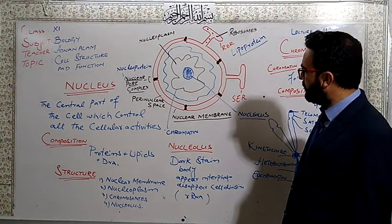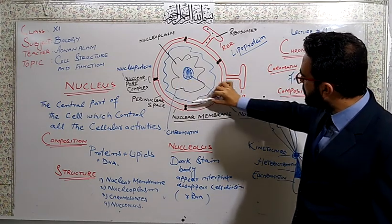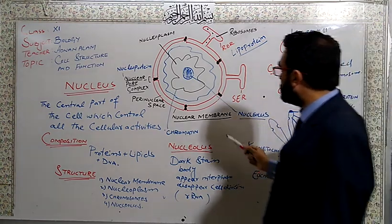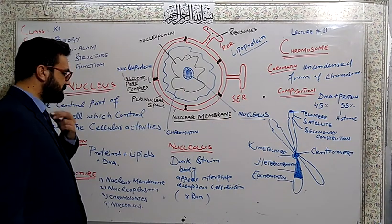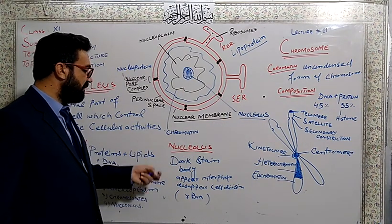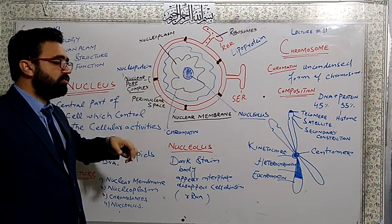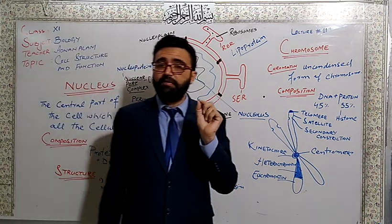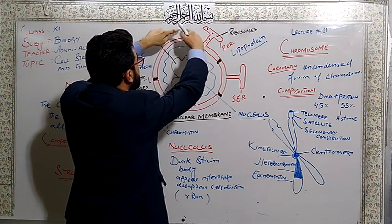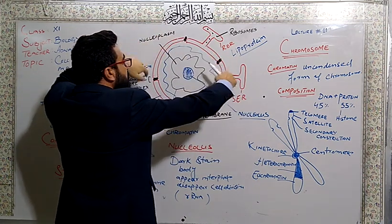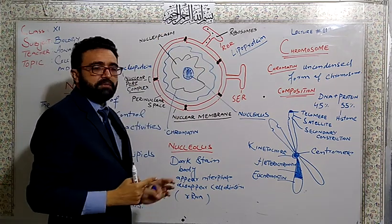The space between the two membranes is called perinuclear space. Inside the nucleus there is a dark stained body which is called nucleolus. This is a dark stained body which appears in interphase and disappears during cell division. Nucleolus does not have any kind of membrane. It's not membrane-bound. It's a dark stained body. It may be in greater number - one, two, three.